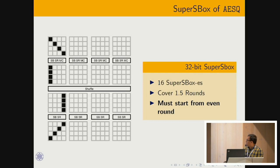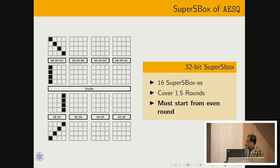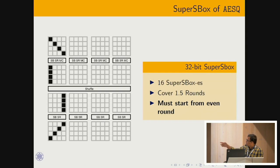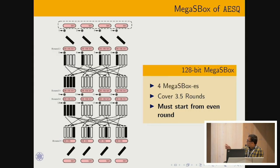To apply the SLS yoyo game design to ASK, we first identified the super S-box in ASK — similar to the AES super S-box — with 16 super S-boxes in total. The mega S-box of ASK, given by the designers themselves, covers 3.5 rounds and starts from even rounds. In the last round, the MixColumns operation is omitted.